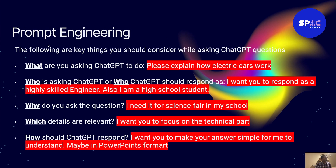These are the steps you need to take to get good responses from AI, and we're going to try them out. The first thing is: what are you trying to ask? You have to put that in your question. For example, let's say what you want to ask is: 'Please explain how electric cars work.' That's the first step. The next step is: who is asking, or who should AI respond as?